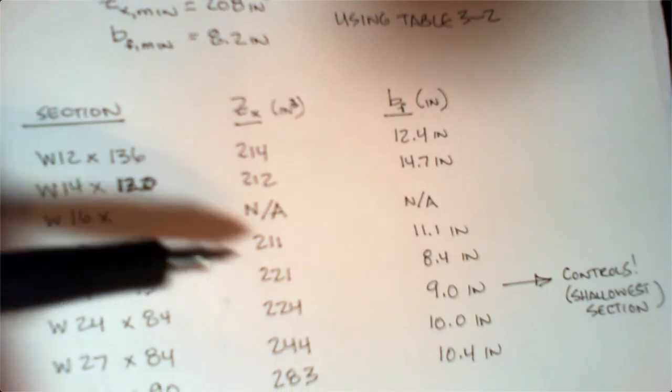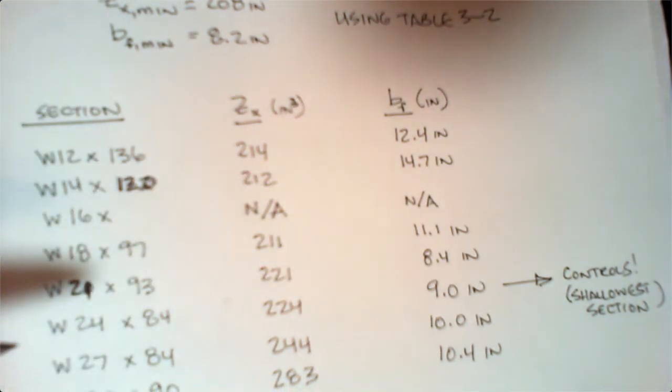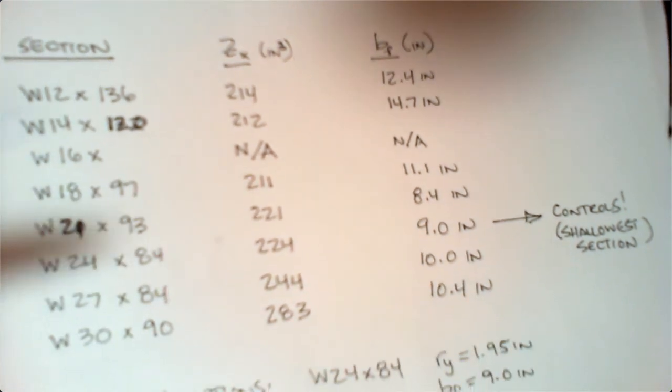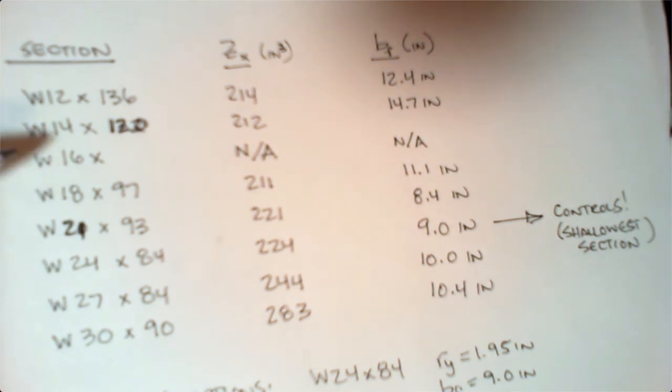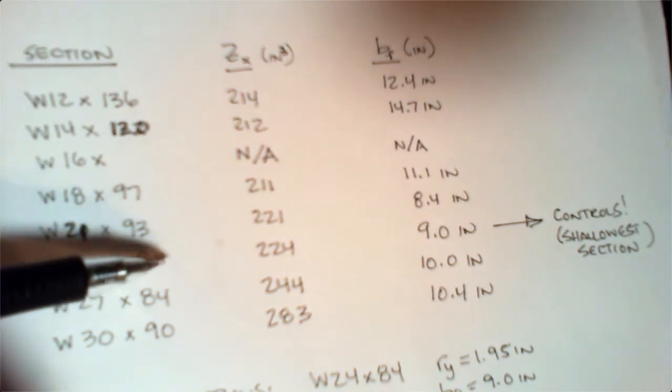Often in practice, instead of using a 16, we'll step up to an 18 and pull that instead, generally because you get better dimensions and better properties out of it that way. Some other reasons: 16s are more often used as columns than they are for beams.